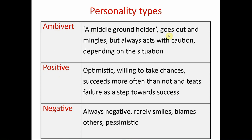Ambivert is the middle ground holder - goes out and mingles but always acts with caution depending on the situation, combining traits of both extrovert and introvert. The next two types are positive and negative. The positive person is always optimistic, willing to take chances and risks, succeeds more often than not, and treats failure as a step towards success. The negative person always finds faults in others, rarely smiles, is pessimistic, and blames others.